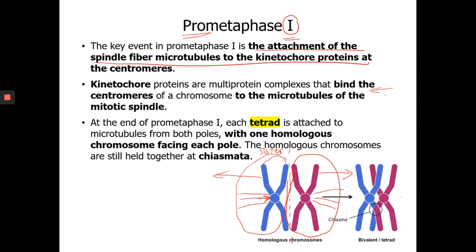What is a tetrad? If you look at a pair of homologous chromosomes, you can see four sister chromatids — because each chromosome has two sister chromatids, so together that's four. The tetrad means four, so basically it refers to a pair of homologous chromosomes that contains four sister chromatids. Chiasma (plural: chiasmata) is where the chromatids from different chromosomes come into contact.